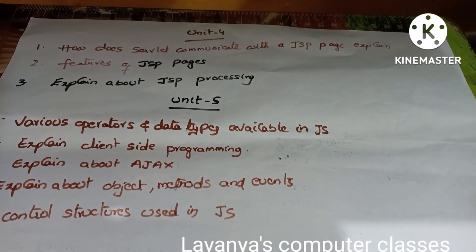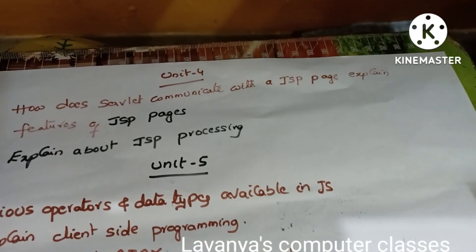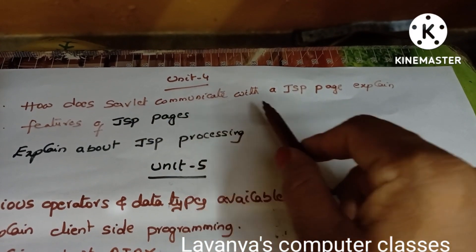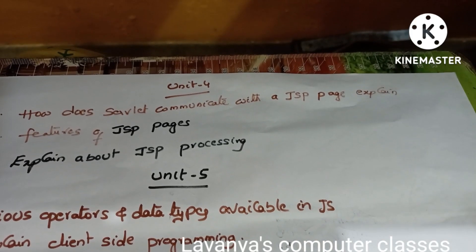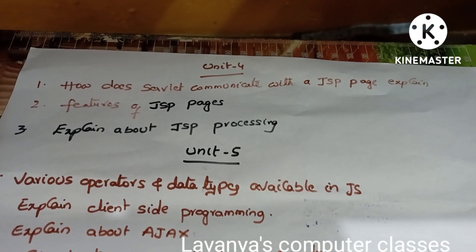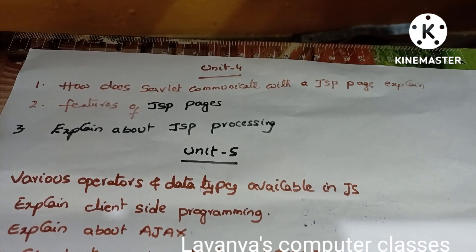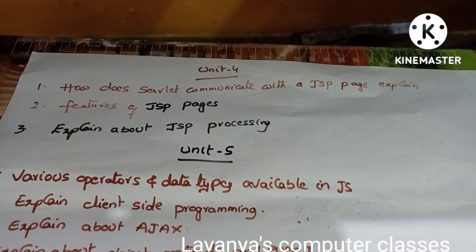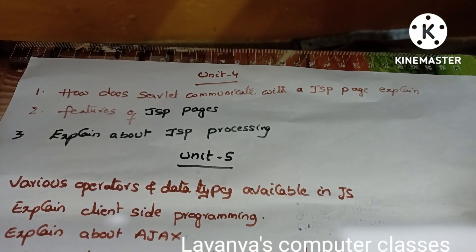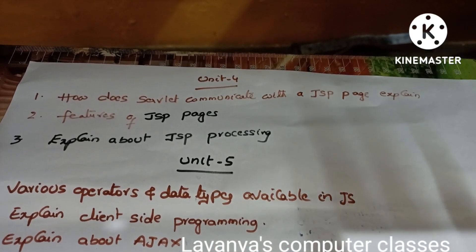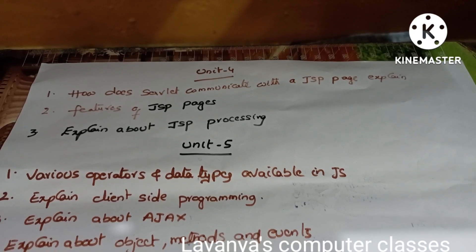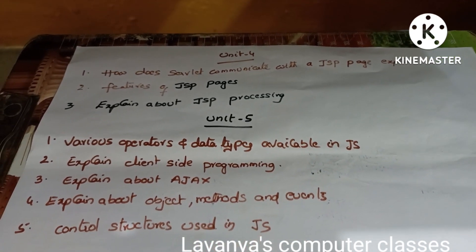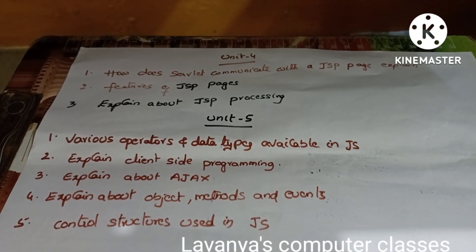Next, important questions from unit 4 and unit 5. How does a servlet communicate with a JSP page - explain? That is the first question. Second question is explain the features of JSP pages and explain about JSP processing. Unit 5: explain what are the various operators and data types available in JSP.